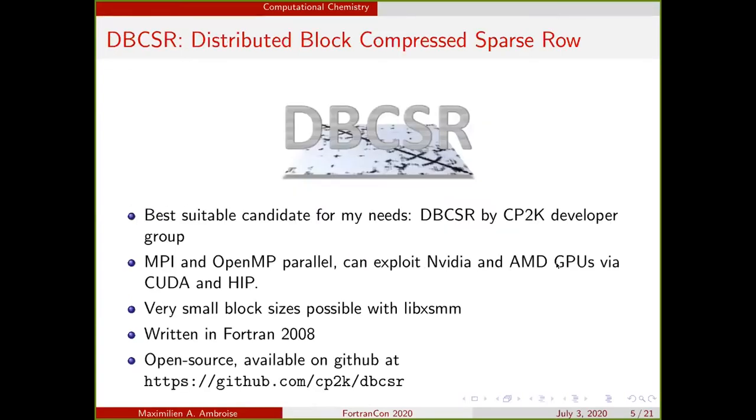DBCSR, the distributed block compressed sparse row library, was the best suitable candidate for my needs. It's developed by the CP2K developer group, which a lot of people are based in Zurich, so they are probably here at the conference. So hi everyone. What's nice about DBCSR, it's MPI and OpenMP parallel, and it can exploit NVIDIA and AMD GPUs via CUDA and HIP. The best part is that it can do calculations with very small block sizes, which was necessary in my case. It's written in Fortran 2008 with a few technical specifications from 2018 sprinkled in between. It's open source and available at GitHub. I really advise you to check it out.